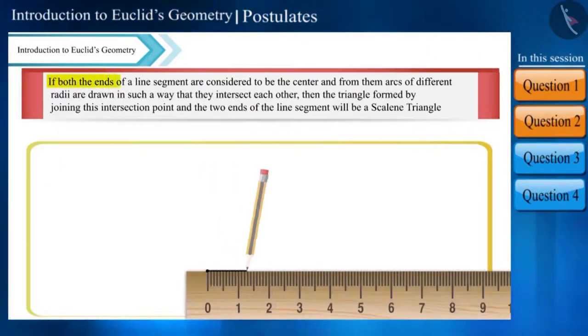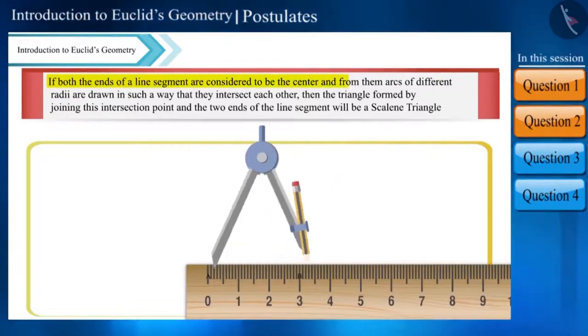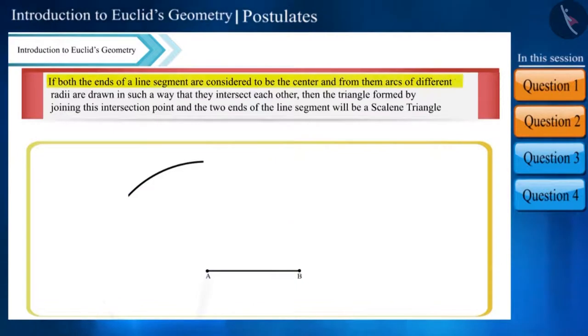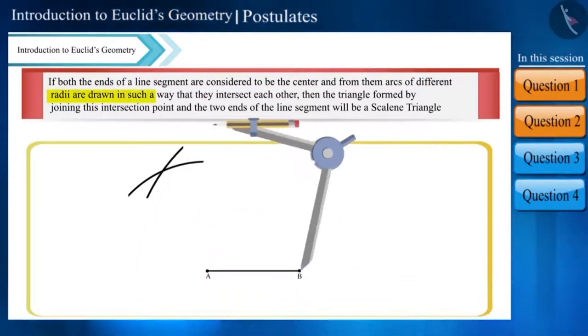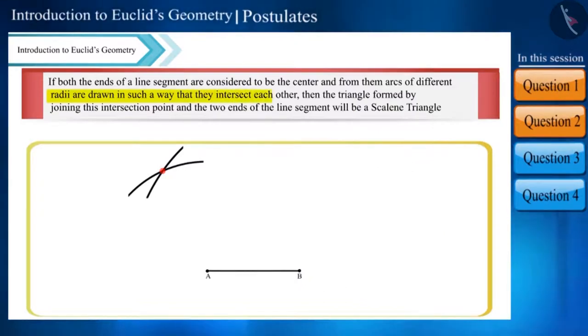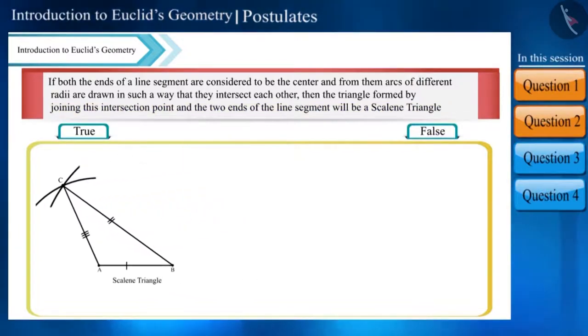If both the ends of a line segment are considered to be the center and from them arcs of different radius are drawn in such a way that they intersect each other, then the triangle formed by joining this intersection point and the two ends of the line segment will be a scalene triangle. Is this statement true?